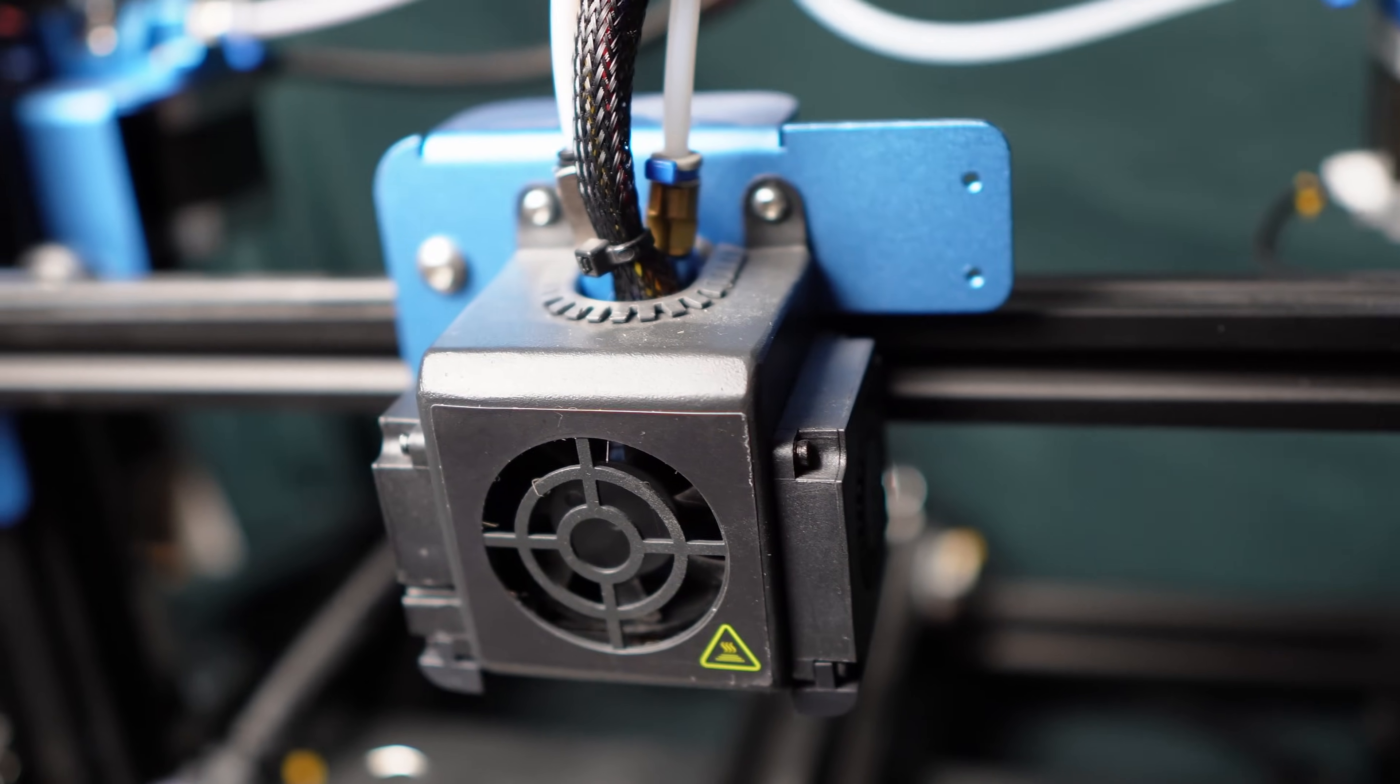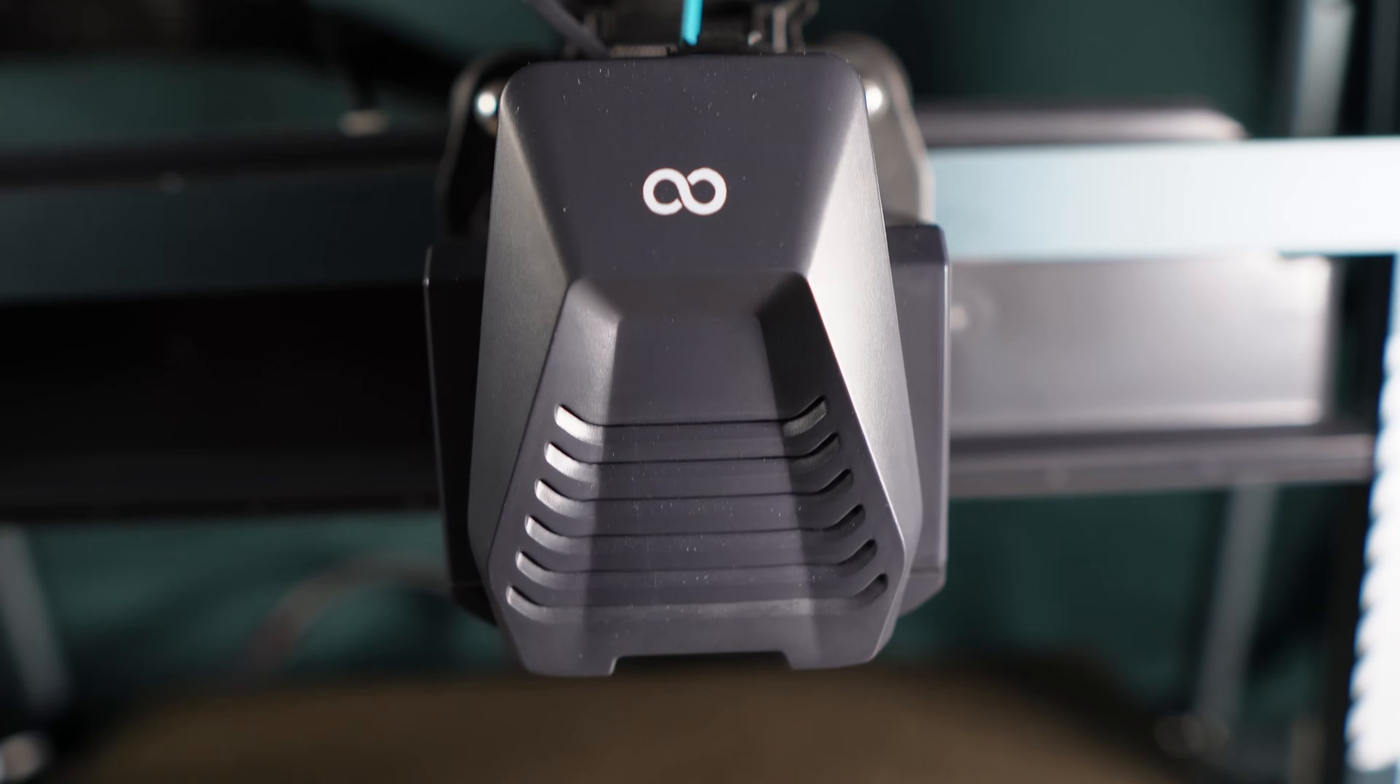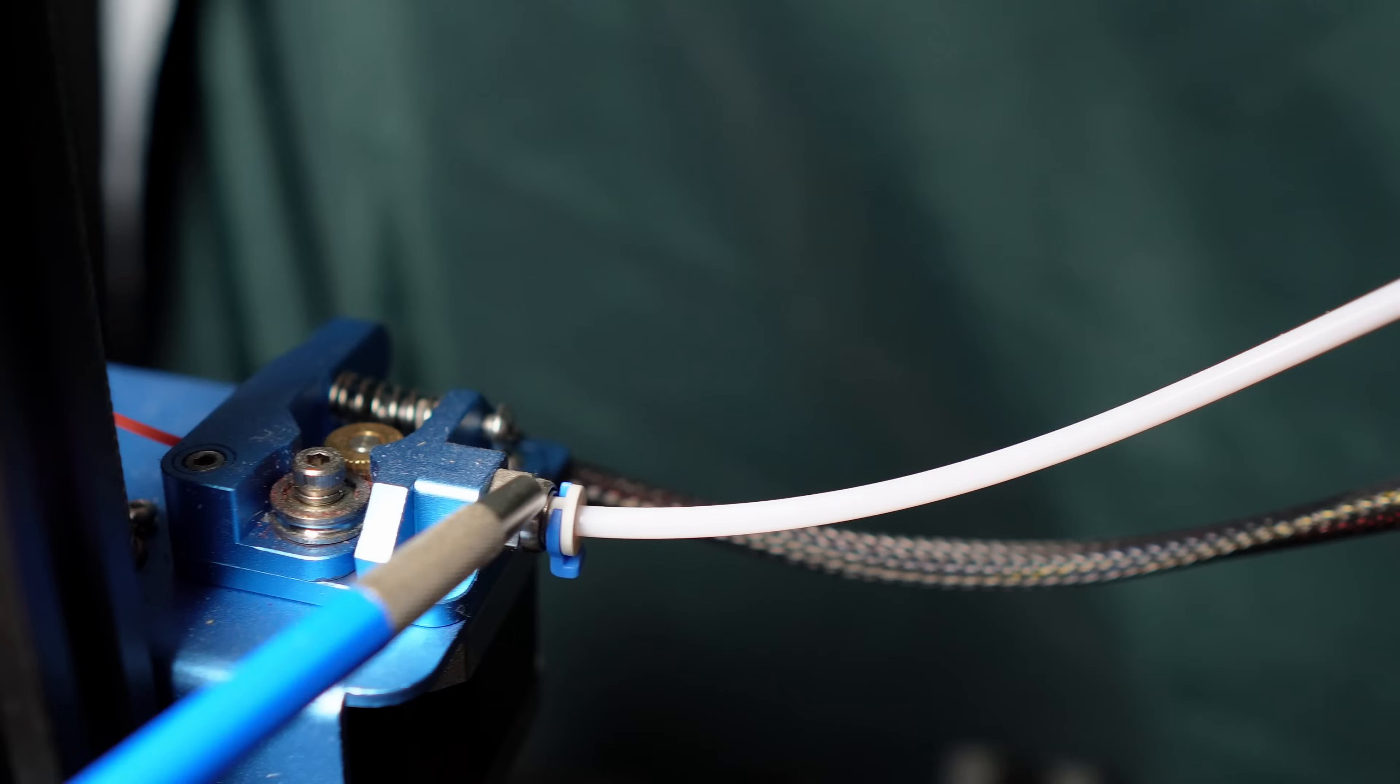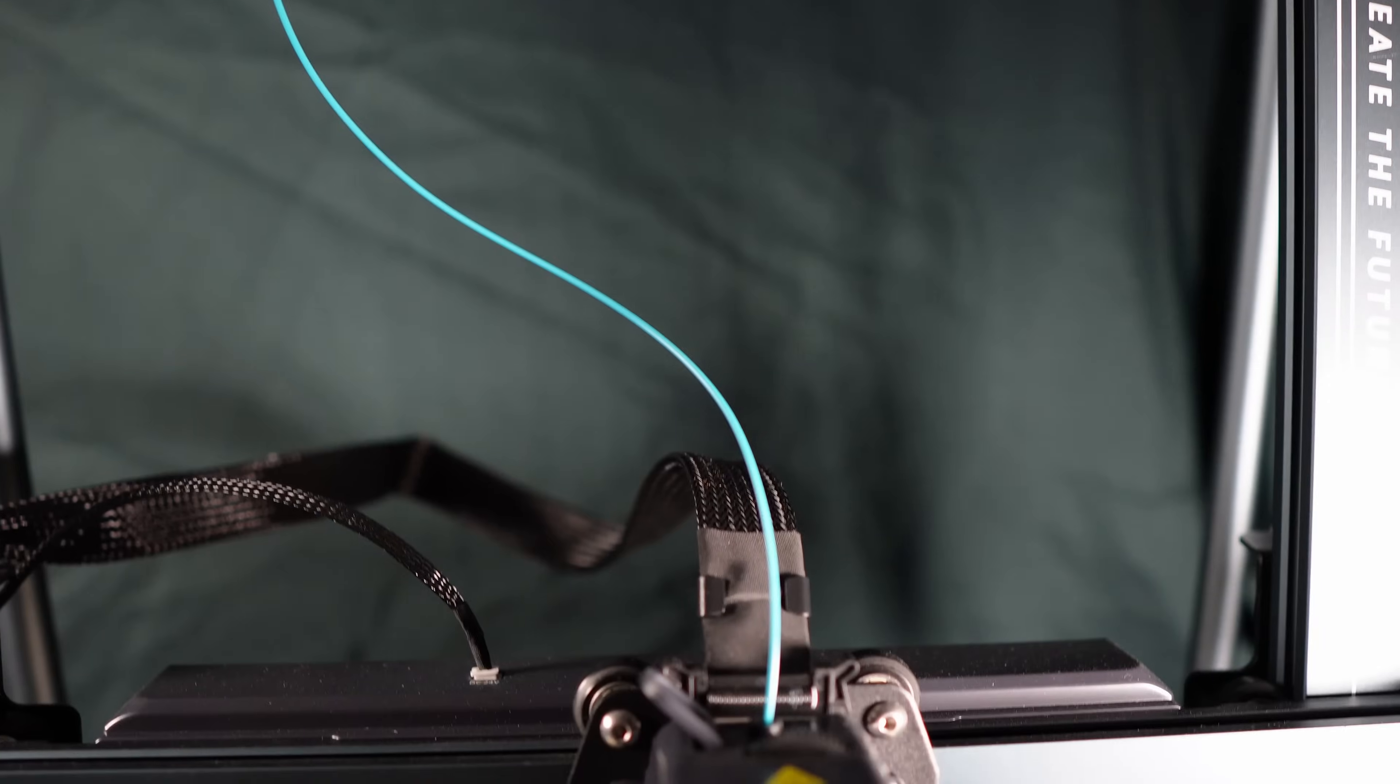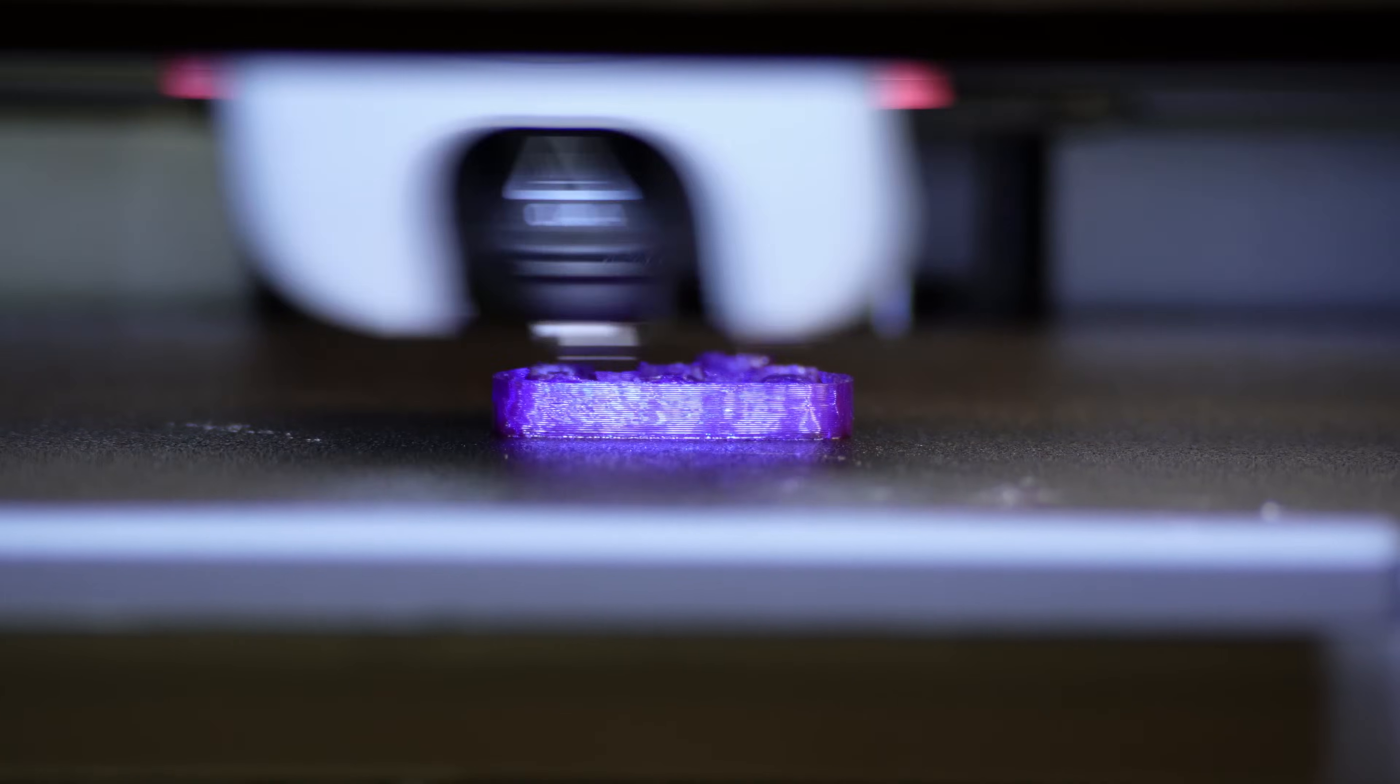With extruders, there are two main types, a Bowden extruder and a direct drive extruder. A Bowden extruder pushes filament through a tube that's connected to the printhead. This lightens the load of the printhead, but also creates a small amount of slack in the line. A direct drive extruder sits above the printhead and pushes filament directly into the heated nozzle, hence the name direct drive. The recommended type for TPU is a direct drive, and that's what I'll be using today.